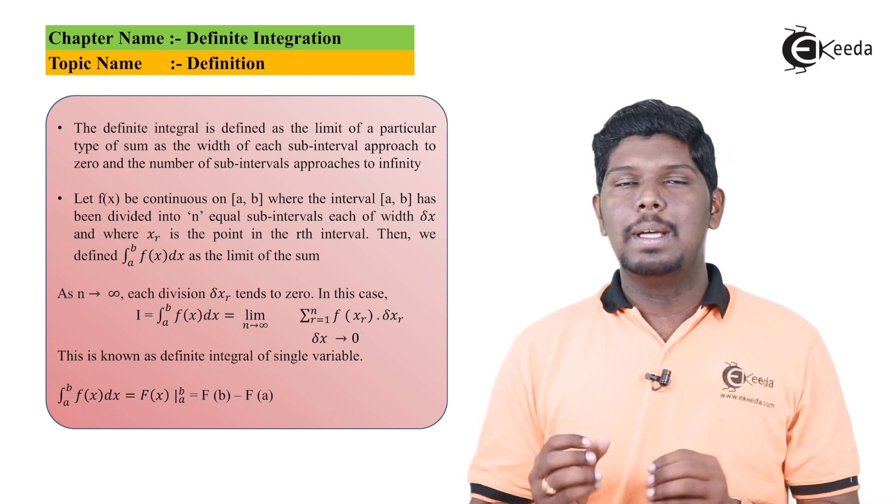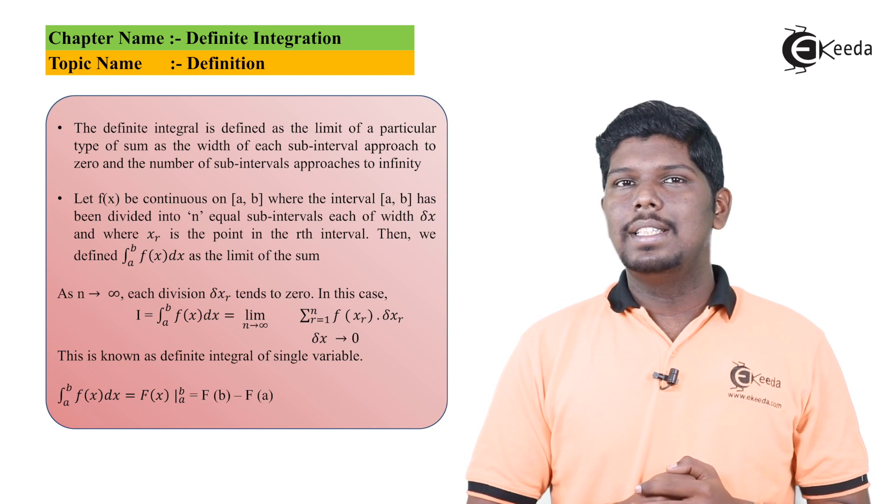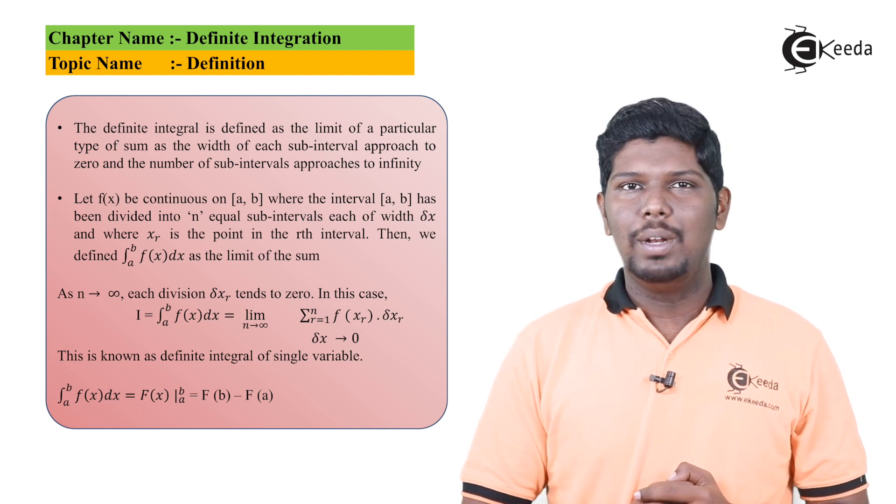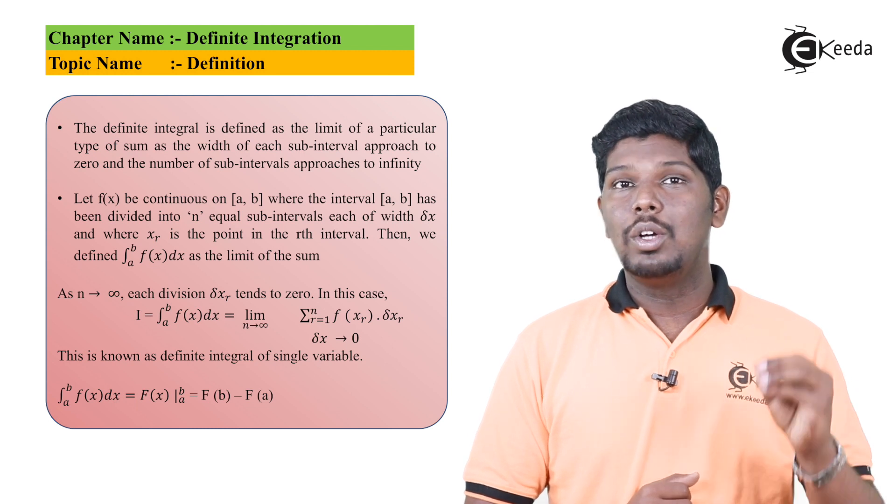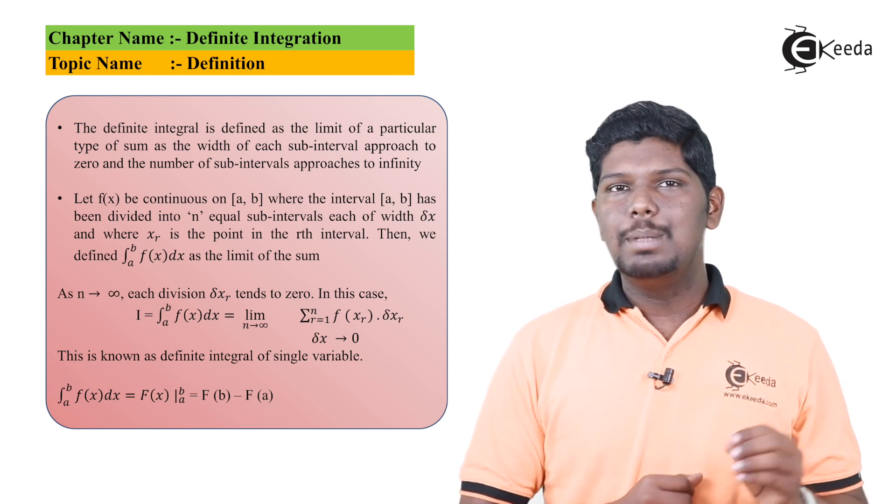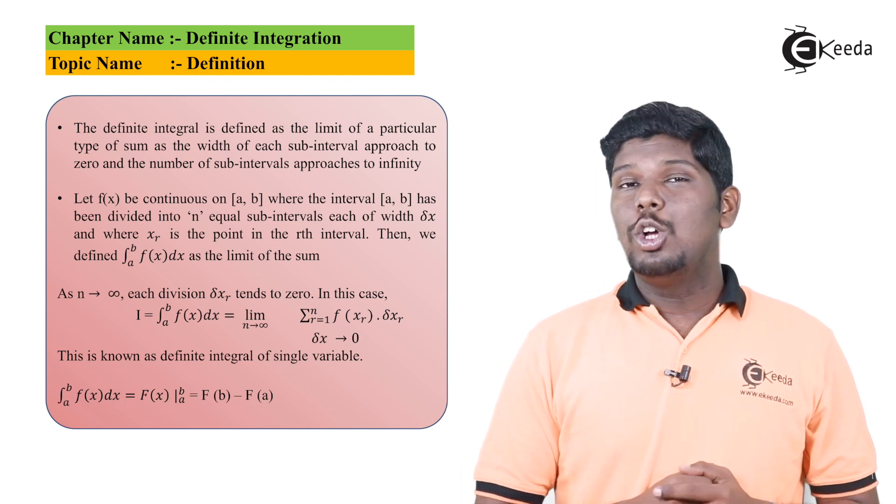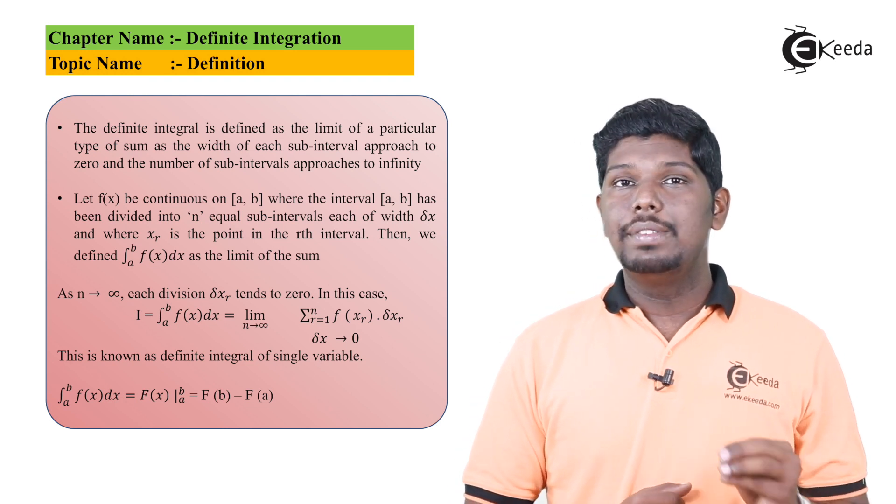This rule is also called as a limit of sum method. All the standard formulas that we have seen in the previous chapter of integration are derived from this formula. As the previous formulas of derivatives were derived from the first principle, similarly these formulas are derived from the limit of sum method. This is also known as definite integral of single variable.